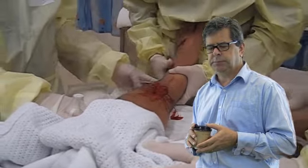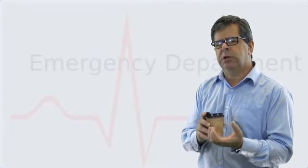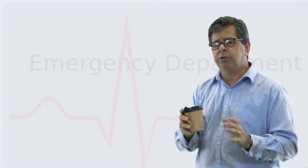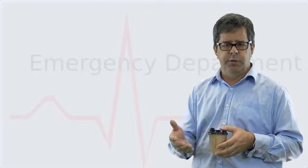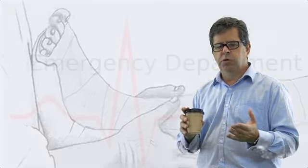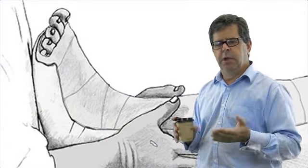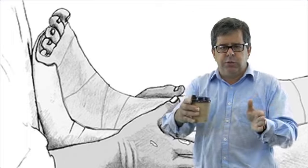You can usually feel that talus clonking back in, even with the surrounding fractures. You'll often observe an improvement to the perfusion. Once you've done that, you should have already organized a backslab including surrounding medial and lateral stirrup to apply support to it.